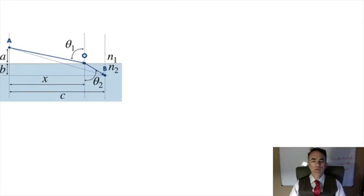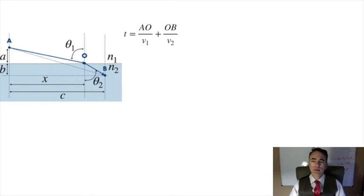The total time of flight is AO over v1 plus OB over v2. Using Pythagoras here, we write OA as the square root of a squared plus x squared, and OB as the square root of b squared plus (c minus x) squared.